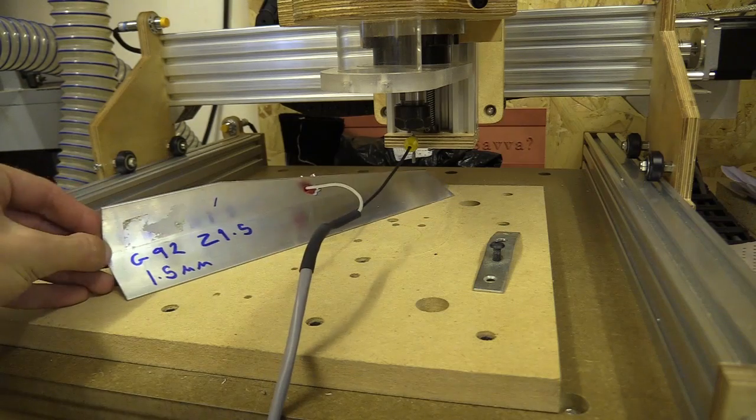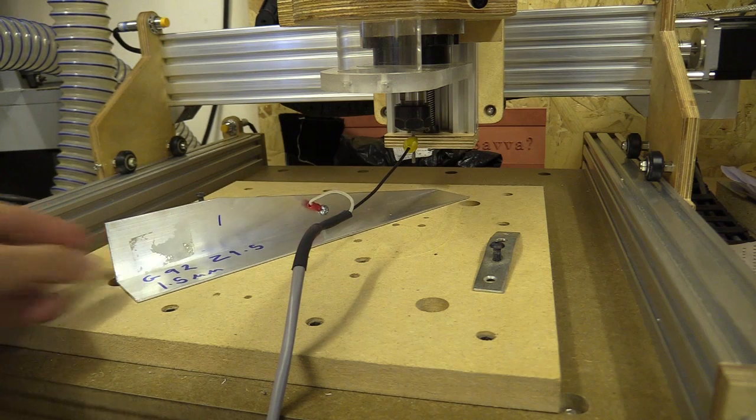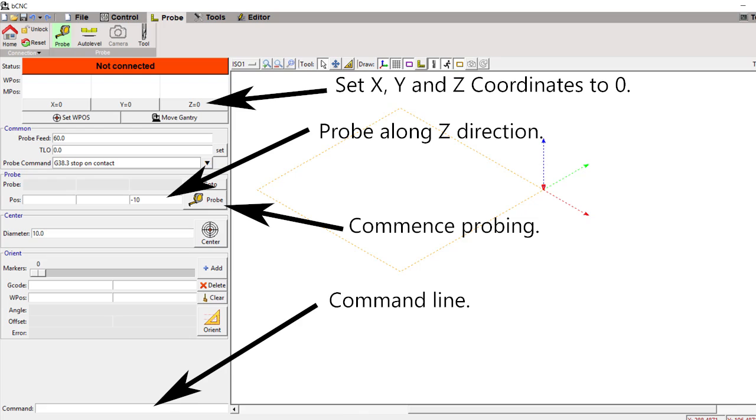I've actually written the code here that I need to write in after I've done the probe sequence. To probe in BCNC, I had to position the bit above the area I wanted to probe and set the X, Y, and Z coordinates to zero. I then set the probe along the Z direction to minus 10, although that could vary.